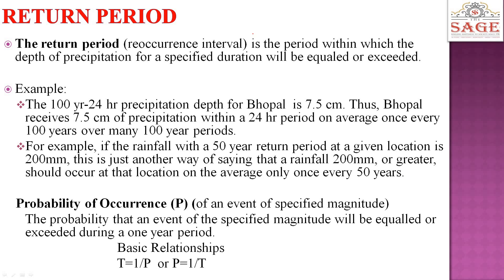First of all we will be studying the return period. So what is the return period? The return period is a period within which the depth of precipitation for a specified duration will be equaled or exceeded. For example, the 100-year 24-hour precipitation depth for Bhopal is 7.5 cm. Thus Bhopal received 7.5 cm of precipitation within a 24-hour period on average once every 100 years, over many 100-year periods.